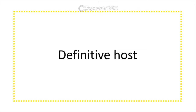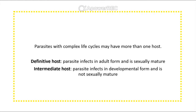The definitive host is the part of a parasite's life cycle where the parasite infects a host in adult form and is considered sexually mature. There can also be intermediate hosts — sometimes numerous — where the parasitic form is still in development and not sexually mature.